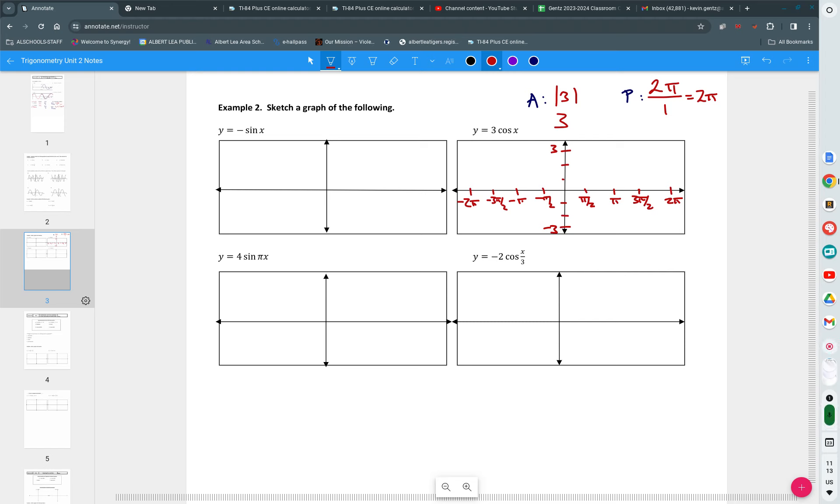Let's go ahead and start our graph. Do you guys remember every graph either starts at the maximum, at the minimum, or at the middle? Do you remember where cosine started? Cosine started up top. So we're going to start the cosine graph up top at 3.